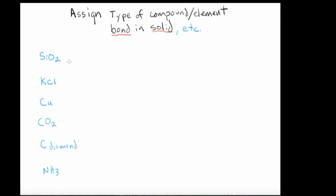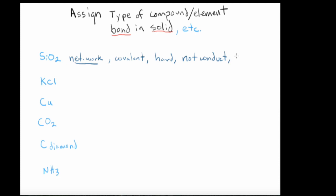We're going to look at a compound and predict its properties. This is silicon dioxide — both silicon and oxygen are non-metals, and this happens to be one of your network solids. The bonding is covalent. This substance is going to be very hard, it's not going to conduct, and it's going to have a really high melting point.